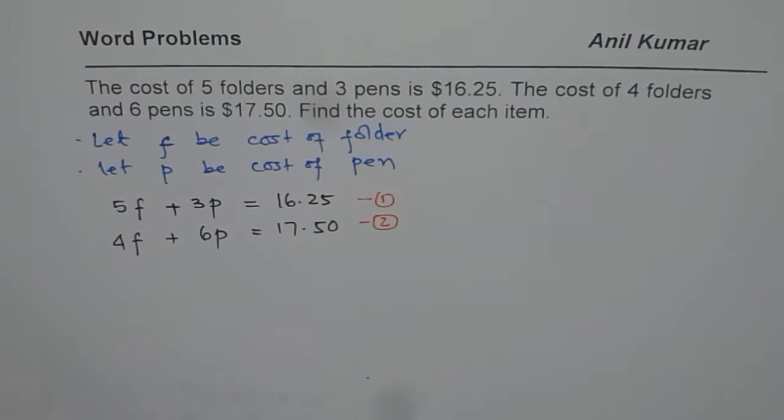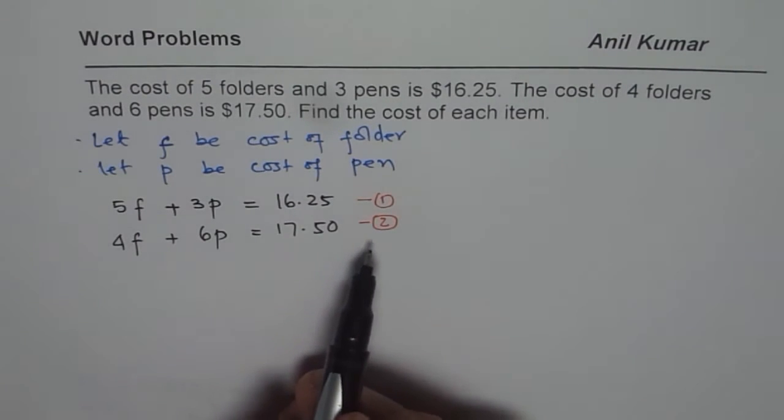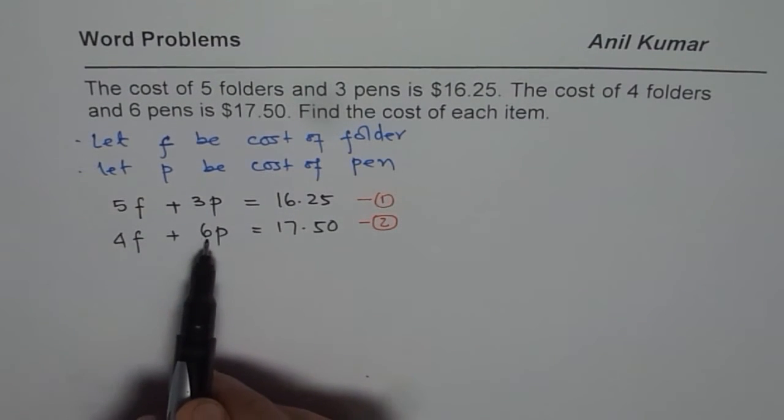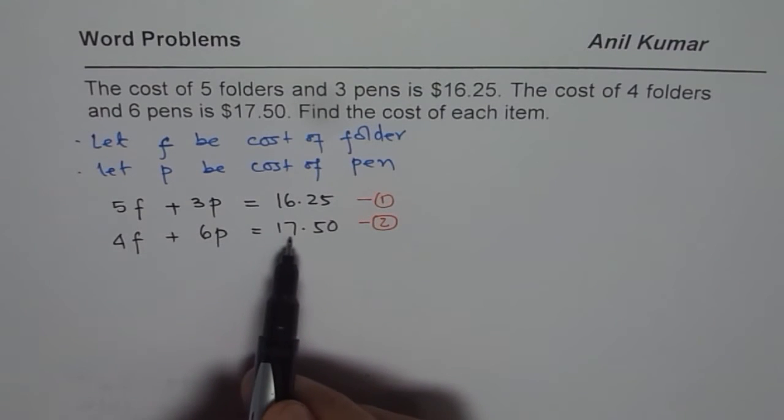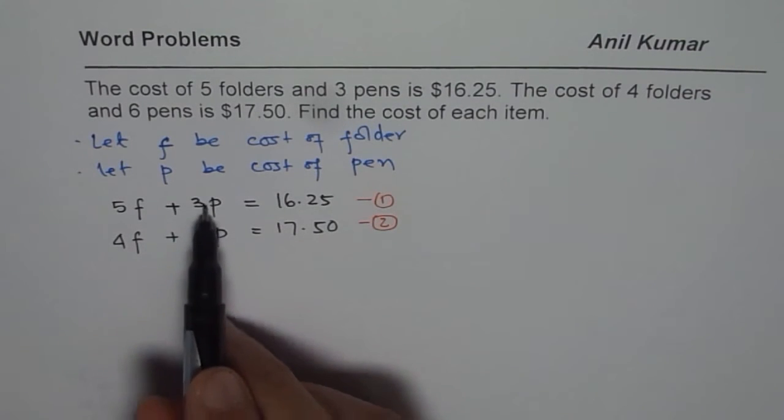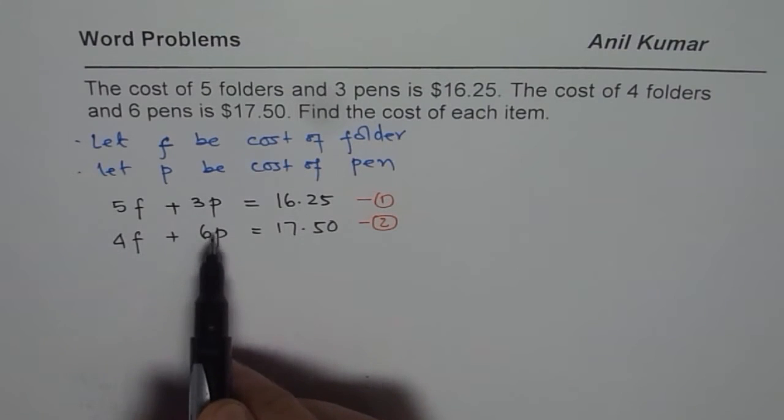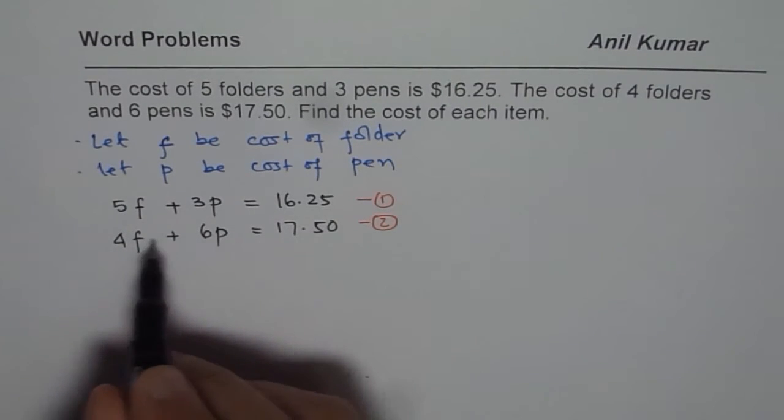Remember that part. Now, how do we do it? In this particular case, what we can do is we can divide the second equation by 2 and then we might get some same coefficients and then we subtract. So let us divide the second one by 2.